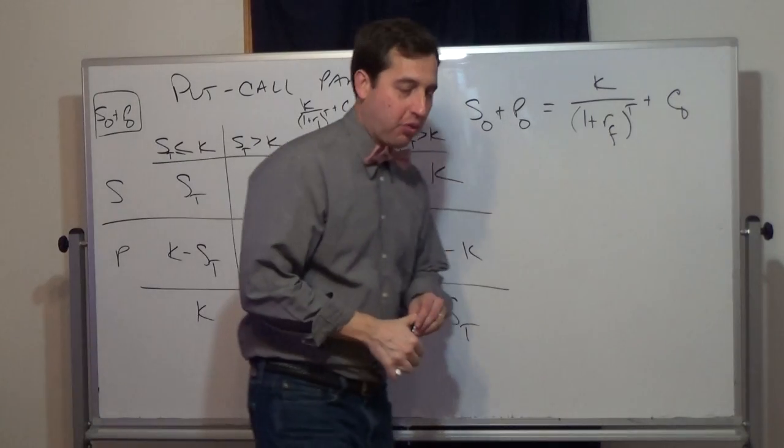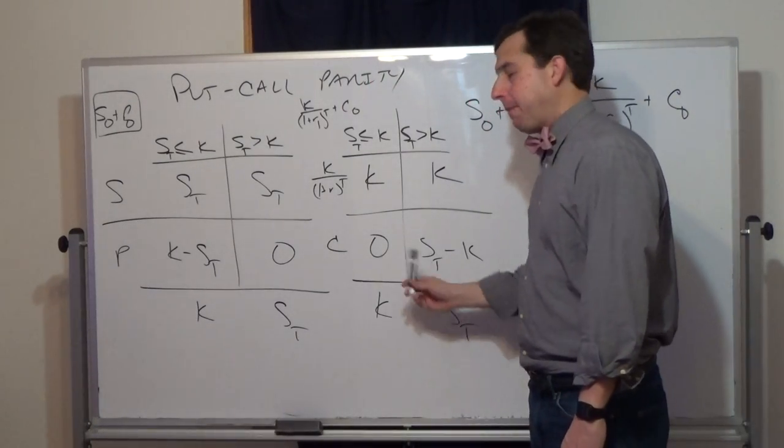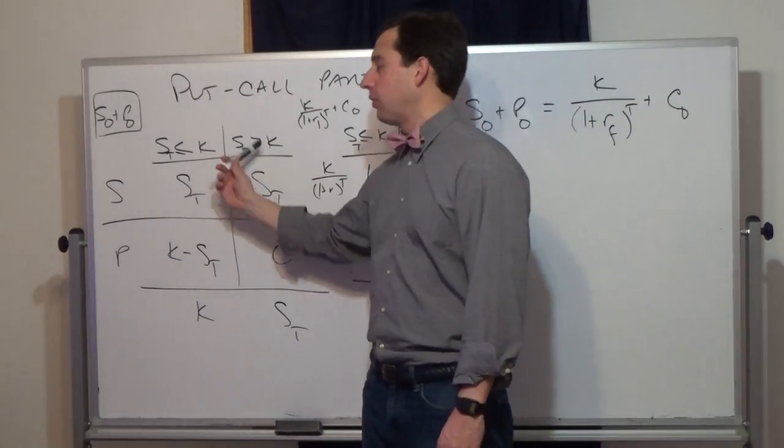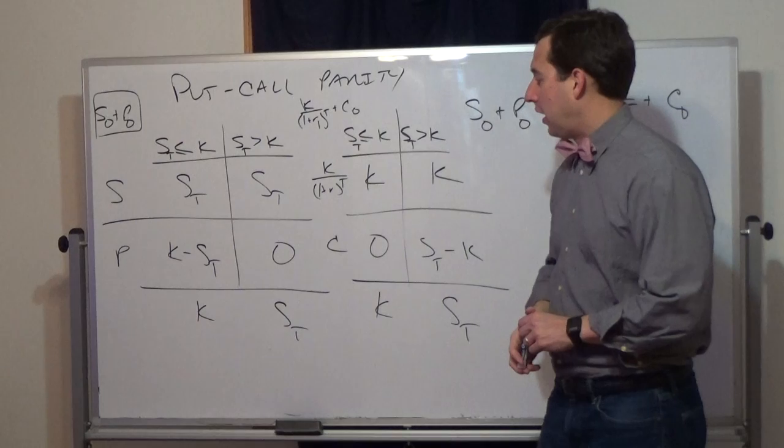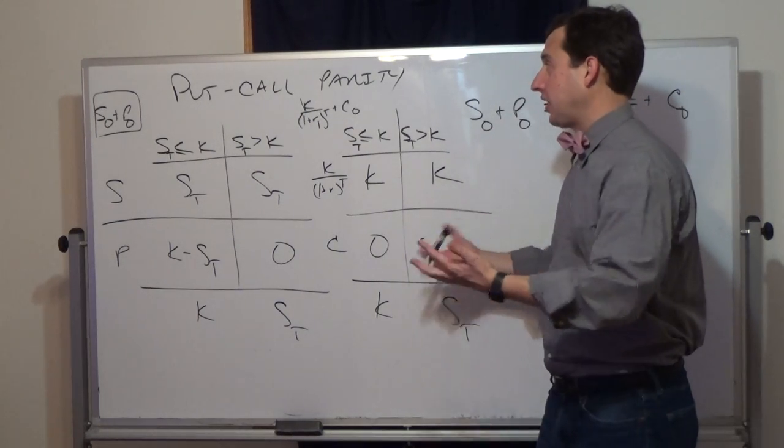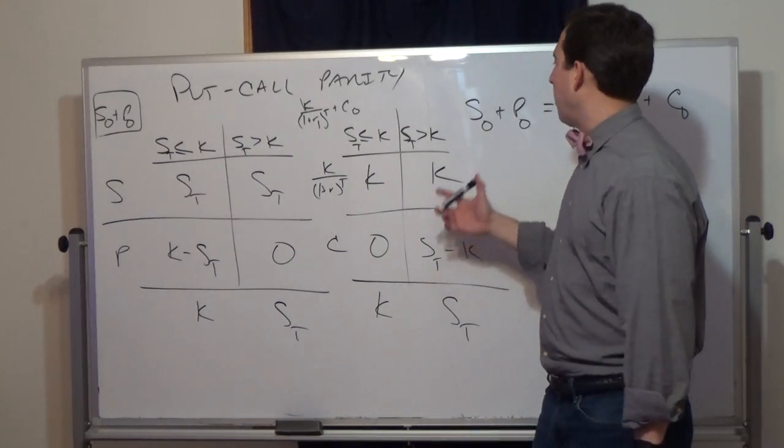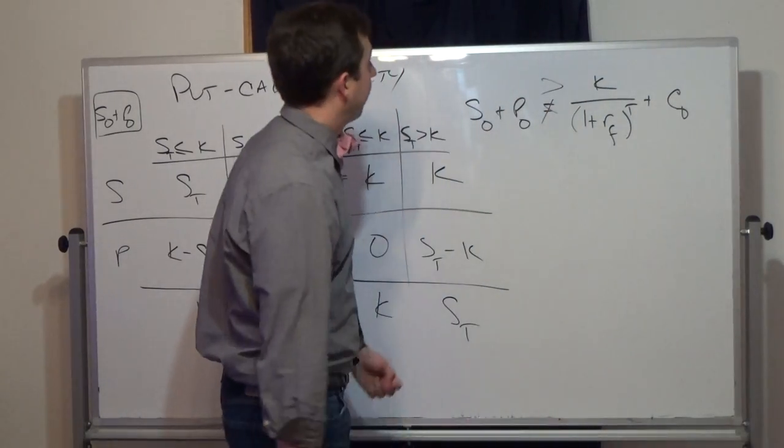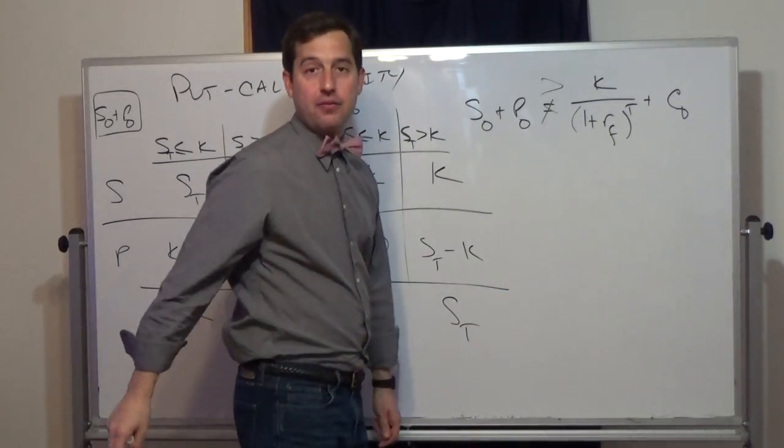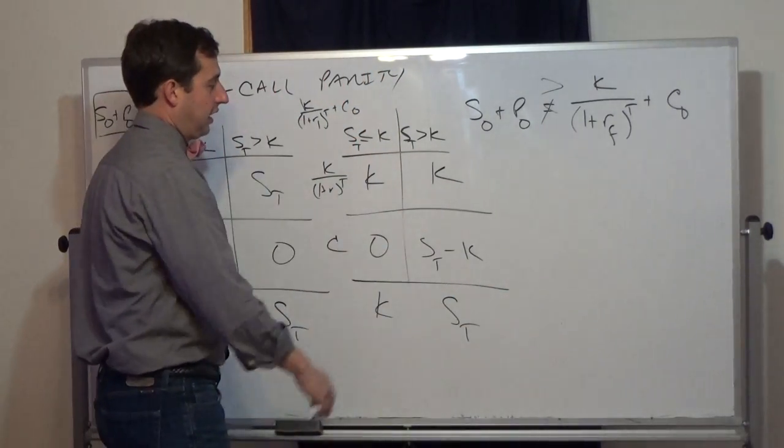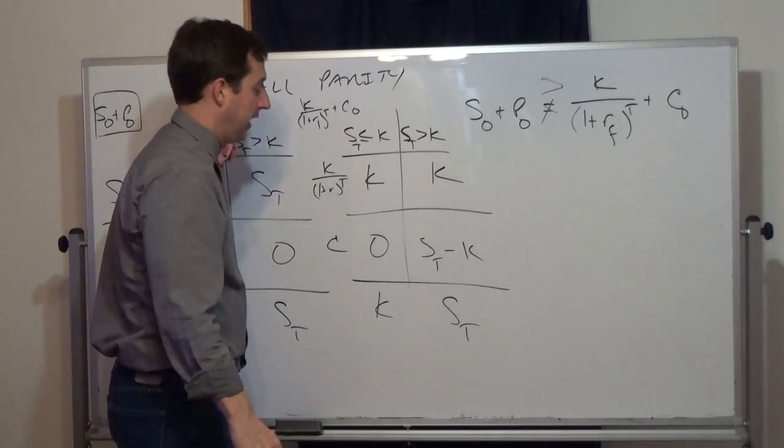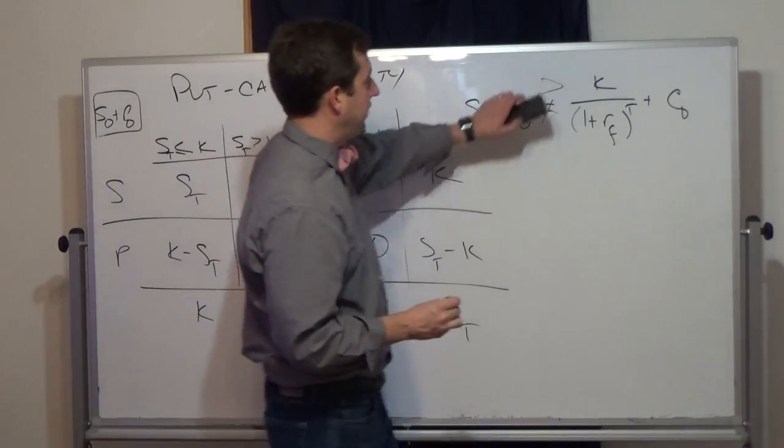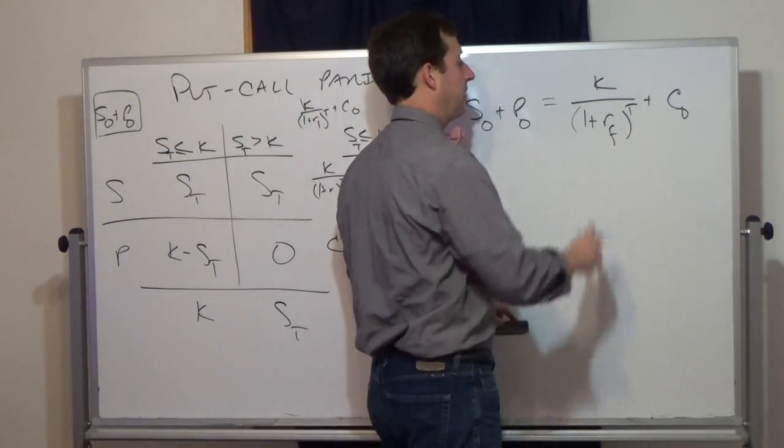This is where arbitrage comes in. If two things have the exact same payments in all states of the world, and here we have two states of the world, then they must have the same price. The next step of this, I won't do it now, is to say what if this doesn't hold? What if we have this situation? Then all you do is you buy this, you sell this, and you make the difference. You could go through this in a table like this and show exactly how much you'll make. But the idea of arbitrage: they both pay the same in all states of the world. Here we have two states. Therefore, they're going to be equivalent.